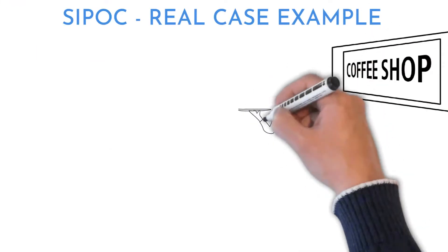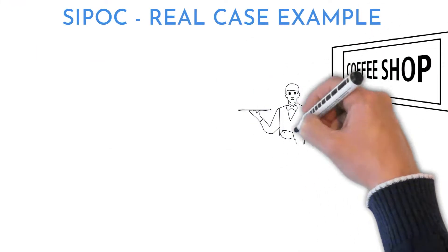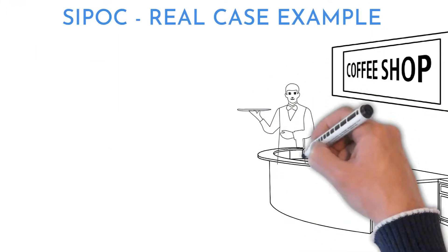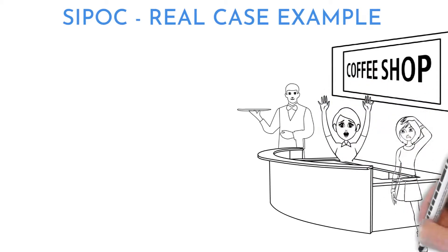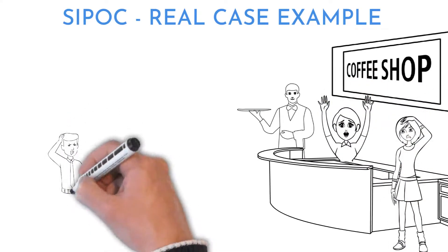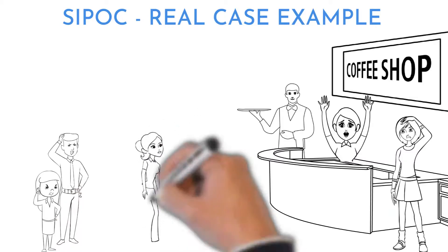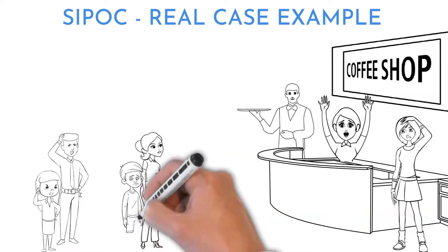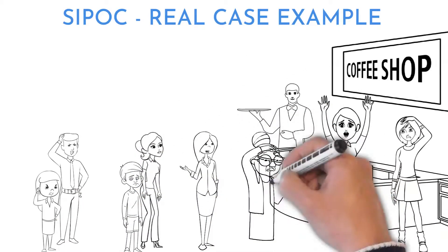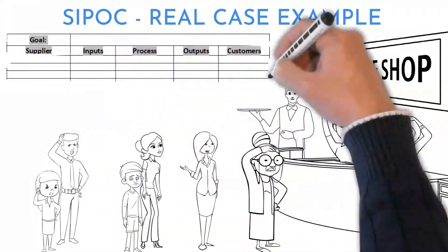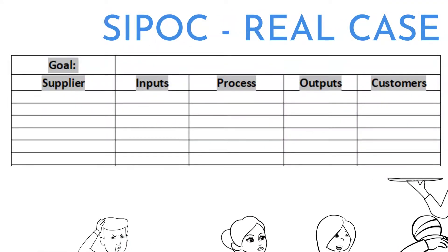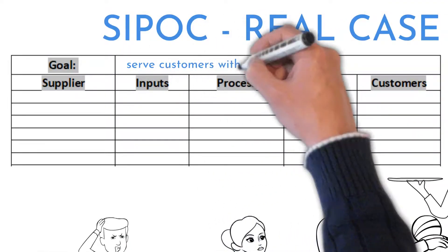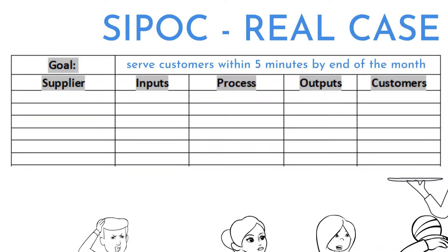Here is a real case example of a failing process at a coffeehouse. We were waiting in line just to order coffee and cake for 15 minutes, then another 10 minutes to get it — and there were just 3 orders before us, so not a very busy day, but 3 waiters trying to satisfy those orders. The goal to improve the process: serve customers within 5 minutes by end of the month.